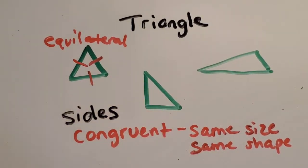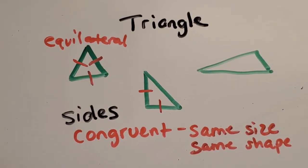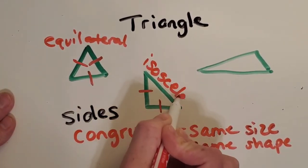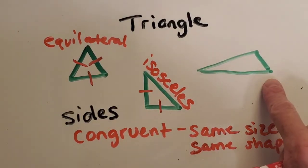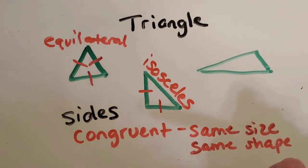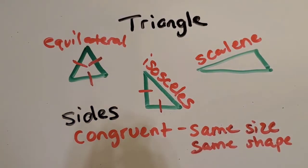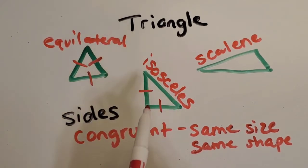This next triangle has two sides that look equal and a third side that is longer — it just has two congruent sides. That has a special name: an isosceles triangle. It's kind of a fun word to say! The last triangle has no congruent sides; they're all different lengths, and that one is called a scalene triangle. So to summarize: equilateral has three congruent sides, isosceles has two congruent sides, and scalene has zero congruent sides.